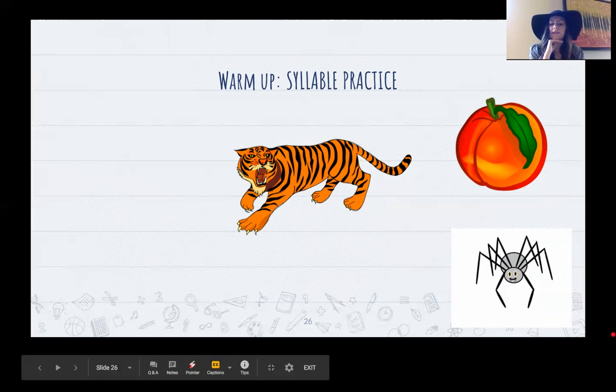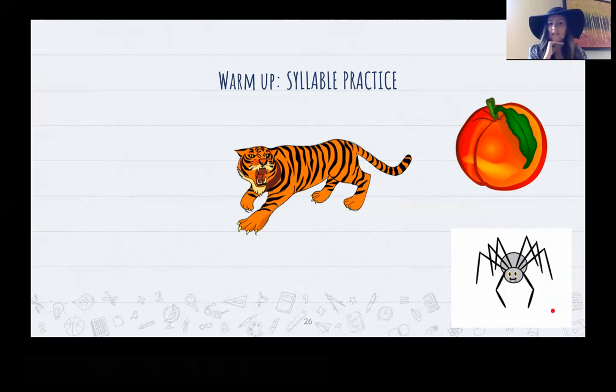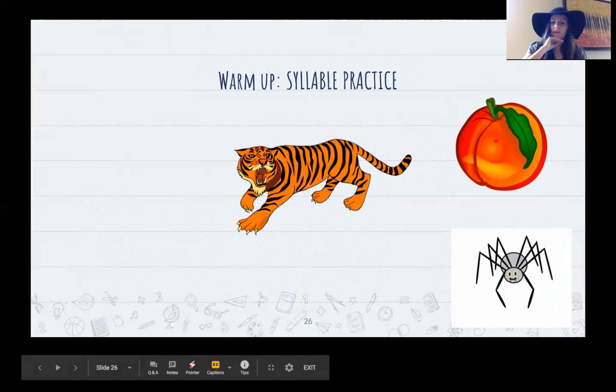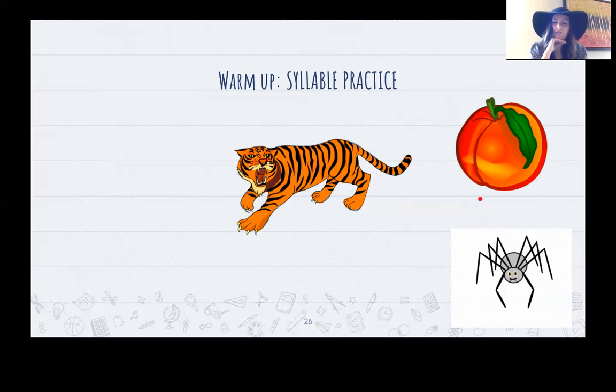Here we have a spider. Say spider. Spider. How many times did Miss Fernandez's chin go down? Spider. Two times. So there's two syllables. Nice job. Let's try this. What is this a picture of? This piece of fruit up here? It's a peach. Say peach. Peach. How many times did your chin go down when you said peach? One time. Nice job.